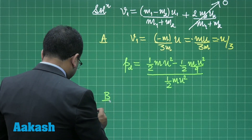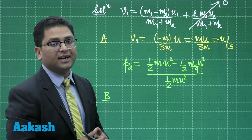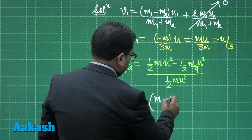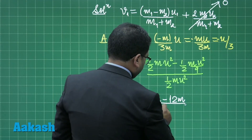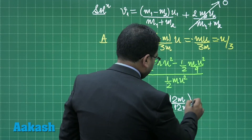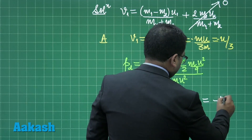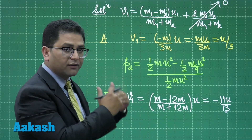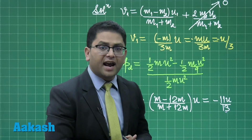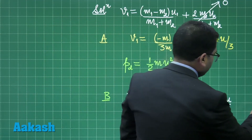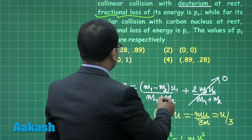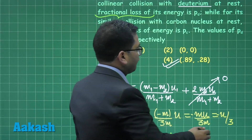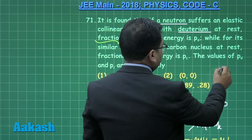For case B, the carbon nucleus has mass 12m. Using the same formula: v1 = (m - 12m) / (m + 12m) · u = -11u/13. Similarly, p_c is the loss in kinetic energy divided by the original kinetic energy, giving the fractional loss. The final answer is option number 4, with no concept beyond straightforward arithmetic.